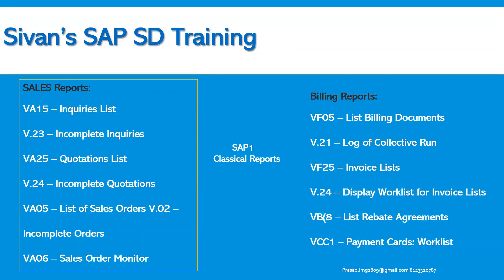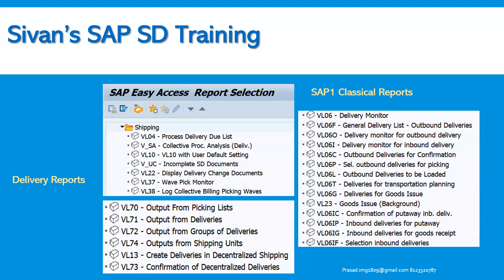We will also see the delivery reports using the SAP1 classical reports transaction code. The delivery reports under shipping in the SAP Easy Access report selection screen: VL04 process delivery due list, VL10 with user default setting, VL06 delivery monitor, VL06F general delivery list, and so on. There are many shipping or delivery-related transaction codes and reports available in the system to see.